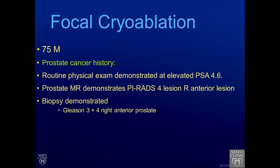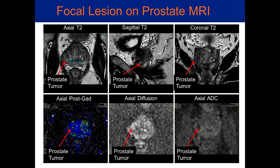Case in point: shown here is a 75-year-old male where on routine physical exam he demonstrated an elevated PSA. Subsequent prostate MR demonstrated a visible lesion in the front of the right side of the prostate. Biopsy of this lesion demonstrated a Gleason 3+4, or 7, in the right anterior prostate, consistent with an intermediate grade prostate cancer that needs treatment. The patient was counseled on standard therapies such as surgery and radiation; however, we chose to proceed with MR Guided Focal Therapy.